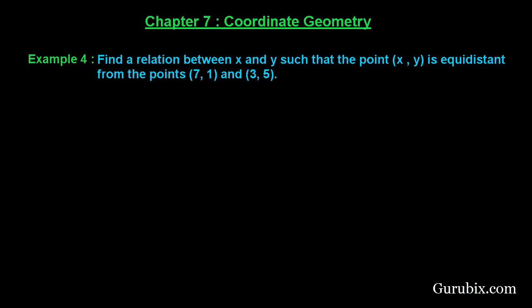Welcome friends, let us solve example number 4 of chapter 7. The example says: find a relation between X and Y such that the point (X, Y) is equidistant from the points (7, 1) and (3, 5). Let us solve this example.